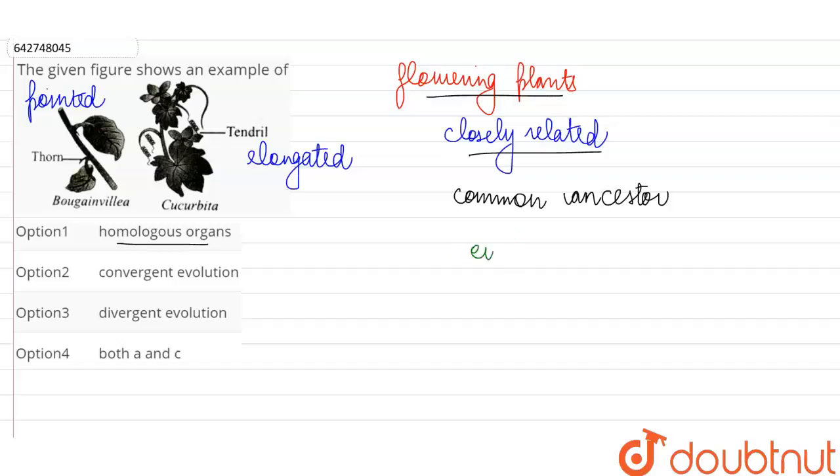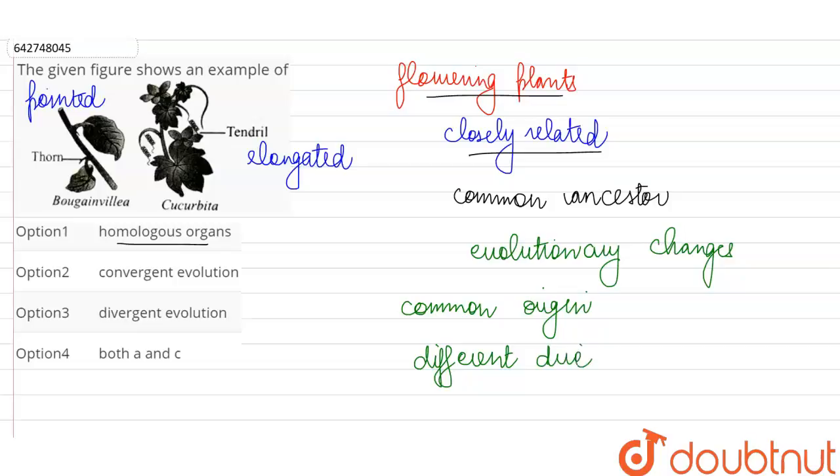That a structure which had a common origin has now evolved towards two different directions, and now when we look at them from the outside, these two structures, even though they have the same origin, they are performing different functions.